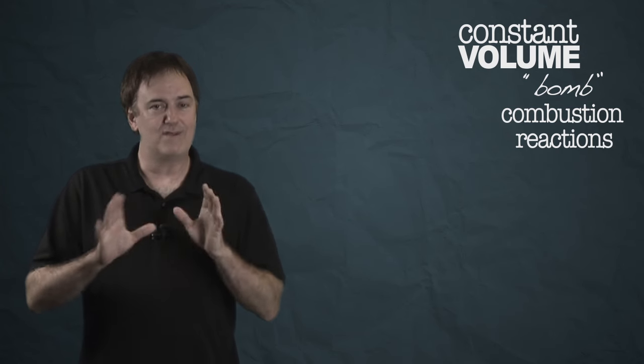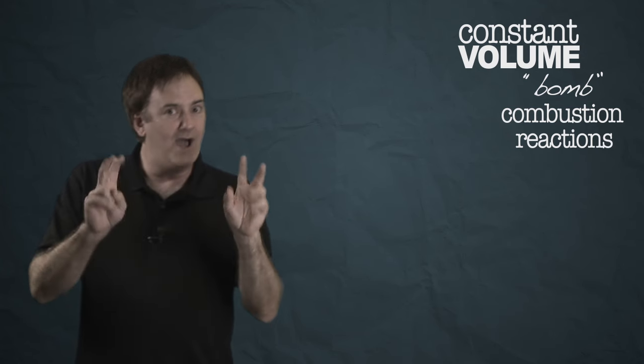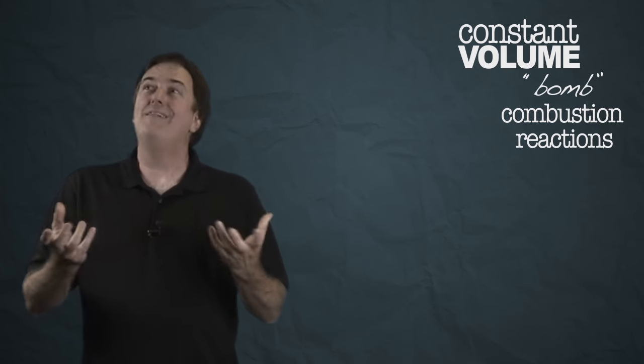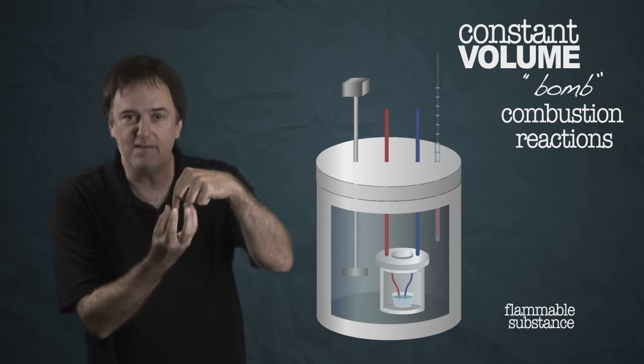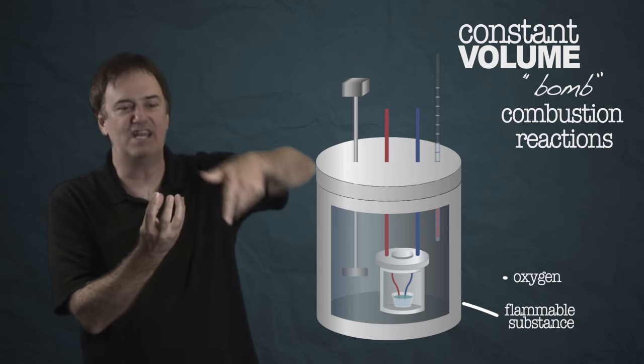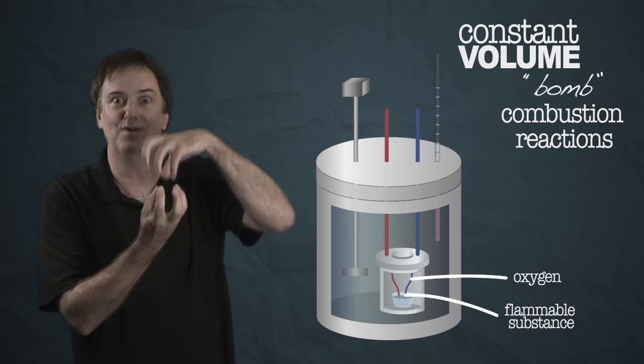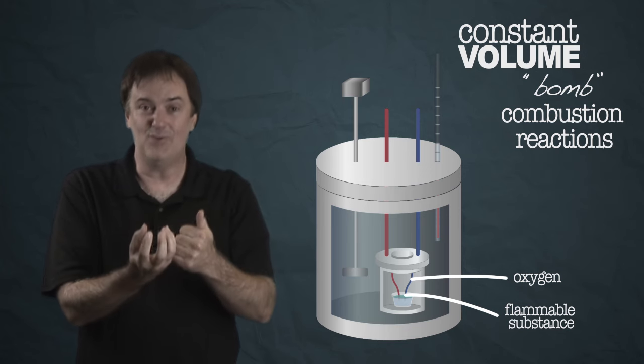Let's shift to constant volume calorimetry. We call it bomb calorimetry. It's the classic way we measure combustion reactions. It's our favorite thing to put in a bomb. Why do we call it a bomb? You take a stainless steel container, you put something highly flammable in it with a lot of oxygen, and you screw the lid on really, really tight, and then you ignite it.